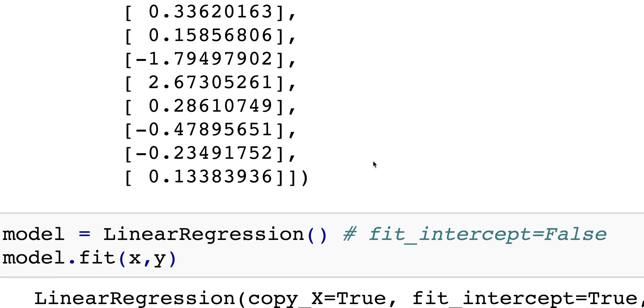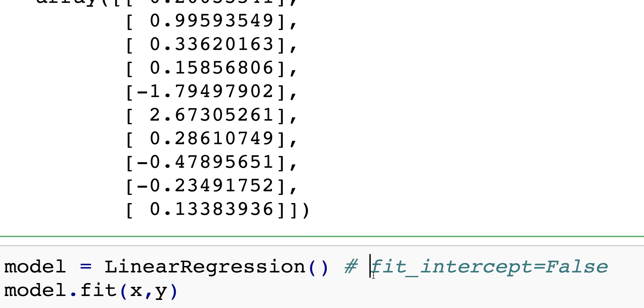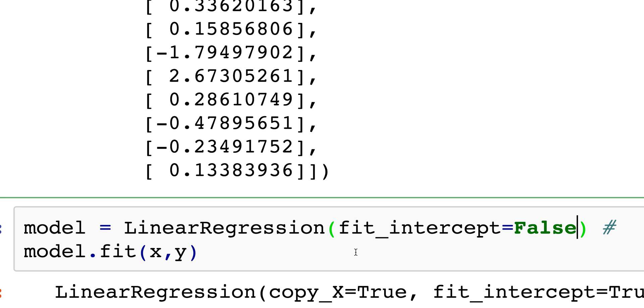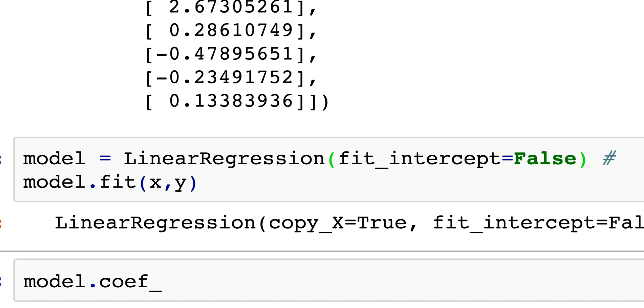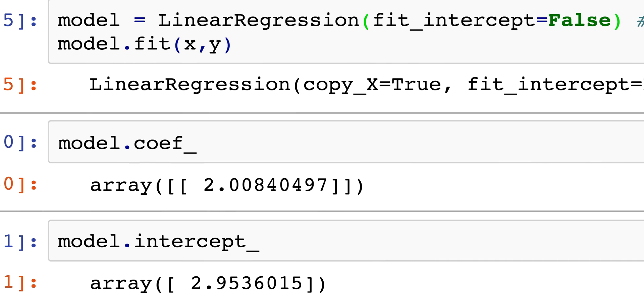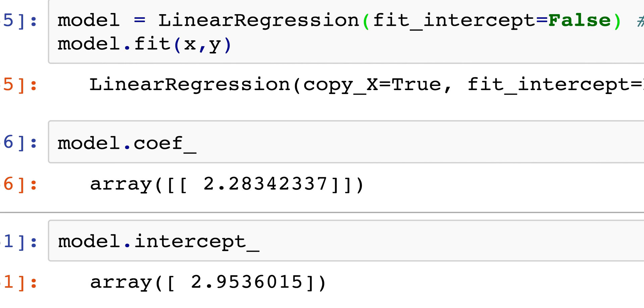Let's just play around with this scikit-learn linear regression model for a bit. One thing you can do is you can say let's get rid of the intercept, just to see what happens. In this case the intercept will be strictly held down to zero. The model coefficient is going to be 2.28.